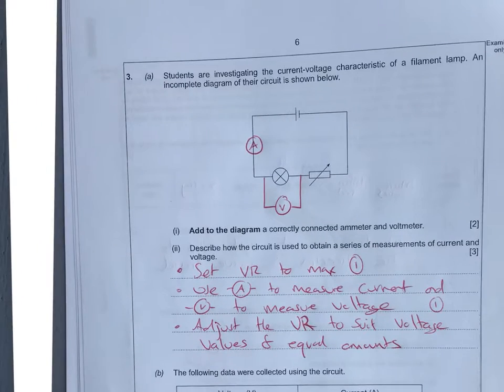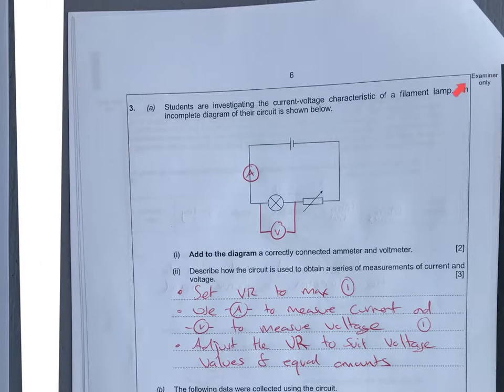This question is on electric circuits and this is a form of a six mark question that might come up. They've given you the basic circuit there. You need to add a voltmeter in parallel and an ammeter in series.